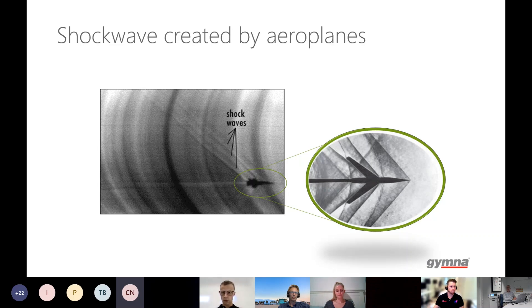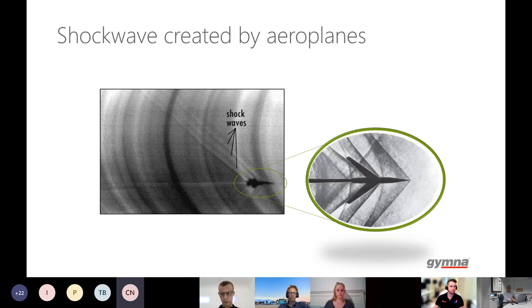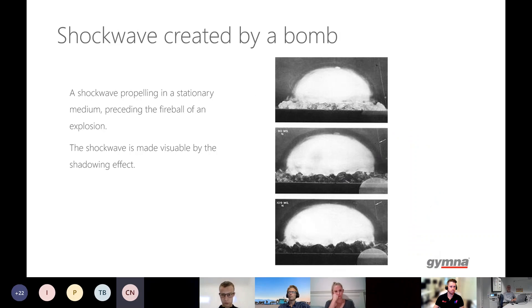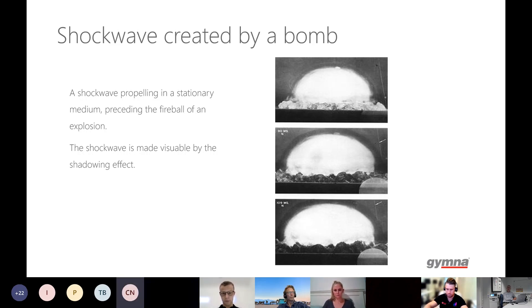Another example of the presence of shockwaves: at a certain speed, aeroplanes create shockwaves in the medium where they're traveling, made visible by gray scales. Another example is a bomb explosion — you see a shockwave preceding the explosion as the area becomes more and more gray. It's related to a big generation of energy that transfers into the surrounding medium, and that's important to take into account.